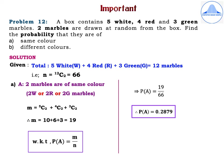Define event A as 2 marbles are of same colour. Two marbles of same colour means either both are white, or both are red, or both are green. So M = 5C2 plus 4C2 plus 3C2, which is 10 plus 6 plus 3 = 19. P(A) = M divided by N = 19 divided by 66. Therefore, P(A) = 0.2879.